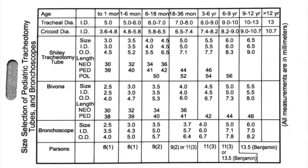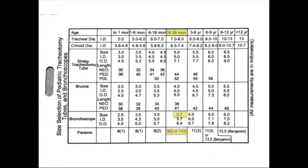This airway reference card shows normal sizes for pediatric airways based on age, with associated tracheostomy tubes, bronchoscopes, and laryngoscopes for each age. In this example, a 2-year-old patient would use a 3.7 bronchoscope and either a 9 or 11 Parsons laryngoscope. A Miller laryngoscope can be used in place of a Parsons laryngoscope.